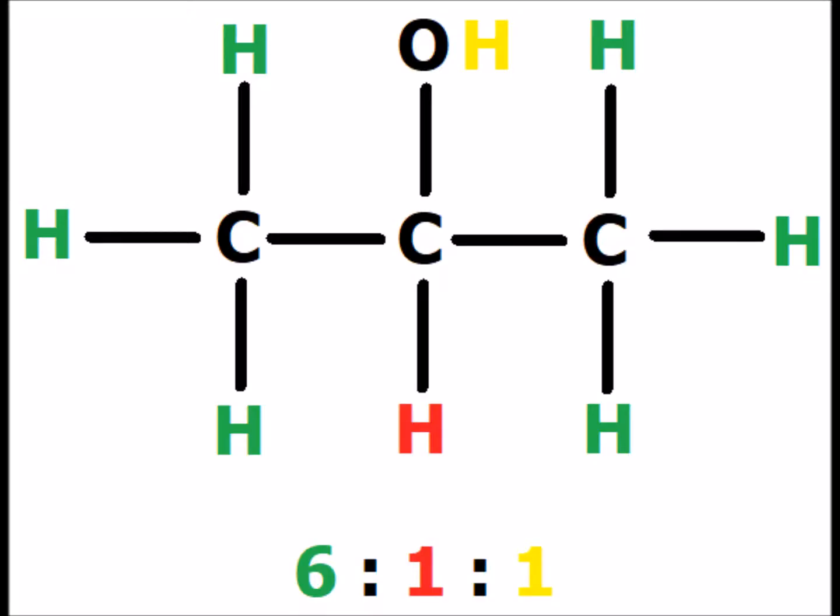2-Propanol has three types of hydrogens, shown in green, red, and yellow, in ratios of six to one to one. The six green methyl hydrogens, which are all symmetrically equivalent, have just one neighbor — the red hydrogen. Therefore the signal for the six green hydrogens will be split into a doublet, showing that they have one neighbor.